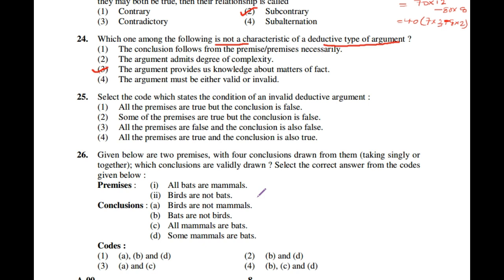Question number 25: Select the statement which states the condition of an invalid deductive argument. The correct answer is: all the premises are true and the conclusion is false. This condition — true premises with a false conclusion — defines an invalid deductive argument, so the first option is correct.